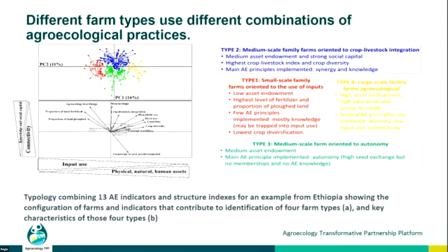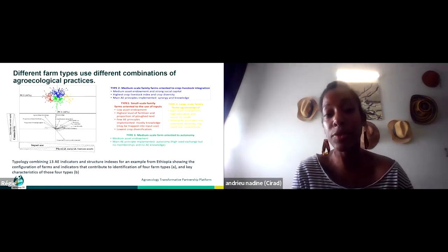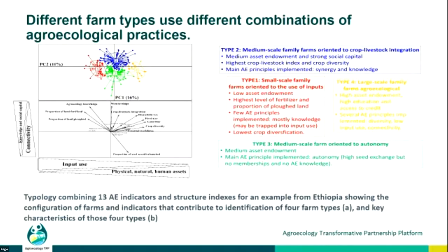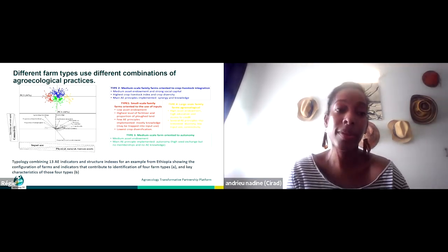Different farm types use different combinations of agroecological practices. A multi-factorial analysis combined with a cluster analysis on the 5,000 surveyed farms examined links between structural characteristics and agroecological practices. While simple trends were not always easy to find, an important insight is that smaller, older farmers are not always the ones using agroecological practices — in many cases it was farmers able to leverage their social or technical assets to implement these practices.